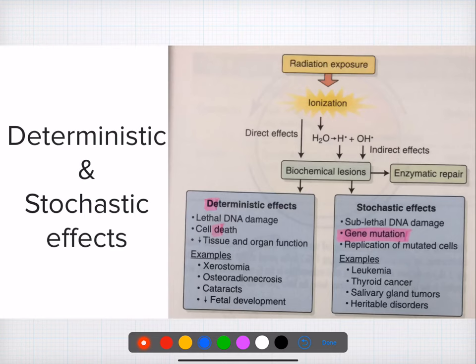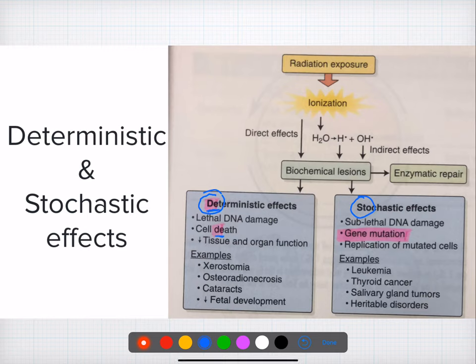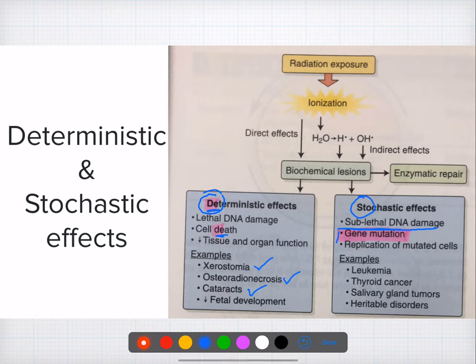There are two types of radiation effects: deterministic and stochastic. Deterministic effects cause cell death — examples include death of salivary gland cells leading to xerostomia, death of bone cells, and death of cells in the eye. Stochastic effects damage DNA, causing gene mutation or manipulation which leads to leukemia, carcinoma, abnormal tumors, or hereditary disorders. This is a most commonly asked topic.